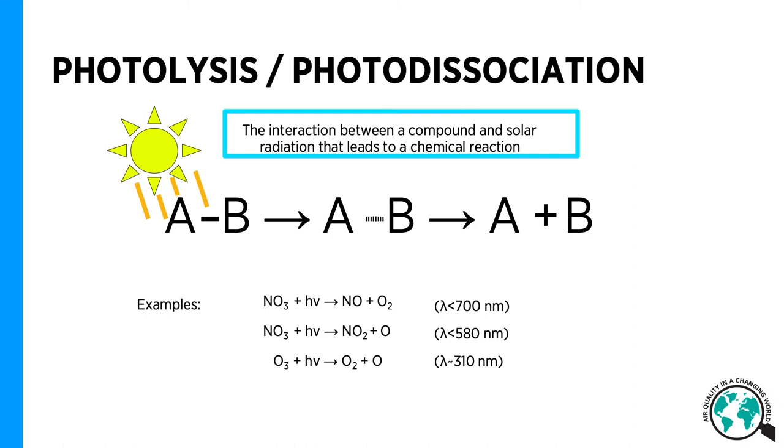Photolysis of ozone is very important since it is the first step in the formation chain of the hydroxyl radical. Photolysis is very central in atmospheric chemistry as it is the only source of several important gases in the atmosphere.